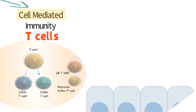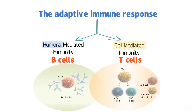T cells protect the body from infections that have reached the inside of cells. Thus, by providing immunity in the fluids of the body through B cells, and by providing immunity from infected cells of the body through T cells, the adaptive immune response is able to provide immunity throughout the human body.